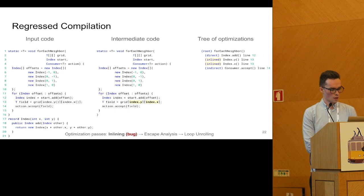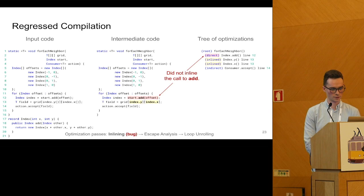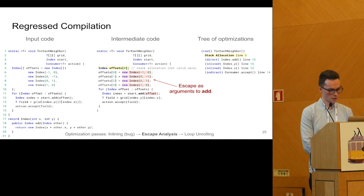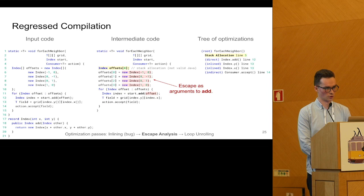First we inline the calls to methods X and Y and record that in the tree on the right. We do not inline the add method — suppose that this is the bug, that there's some bug in the compiler's heuristics — and it leads to the fact that we do not inline the method add. Then comes escape analysis. We can still place the allocation of the array on the stack, but we fail to get rid of the indexes because these objects escape as arguments to the method add, which was not inlined. So we do not record anything in the tree.